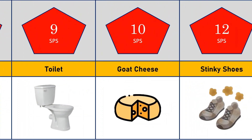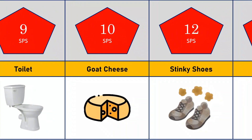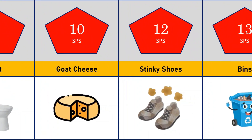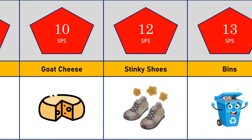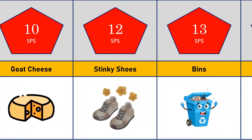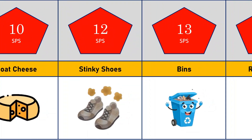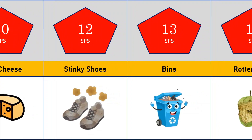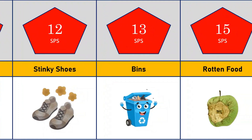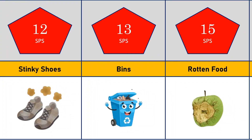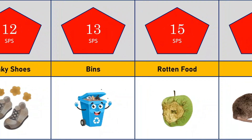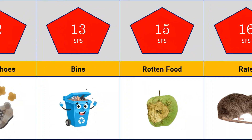Smell of stinky shoes: 12 SPS. Smell of beans: 13 SPS. Smell of rotten food: 15 SPS.